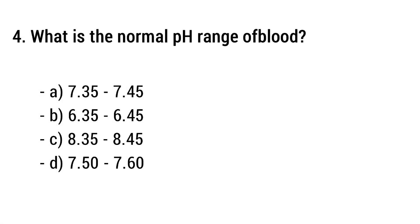Question number four. What is the normal pH range of blood? The right answer is option A: 7.35 to 7.45.